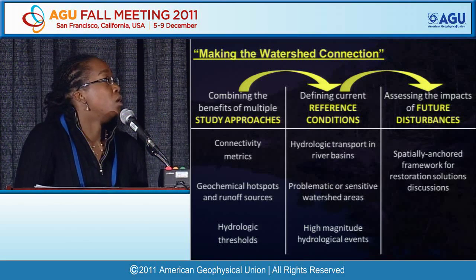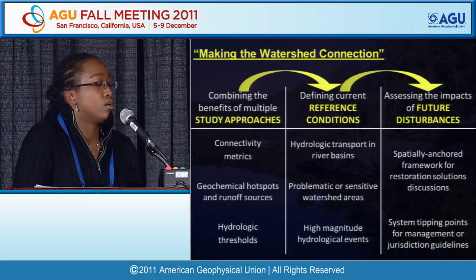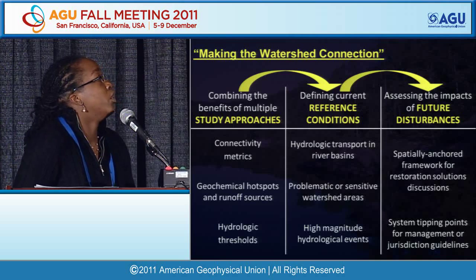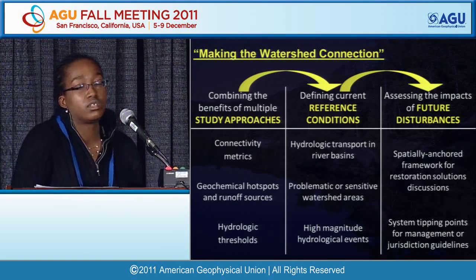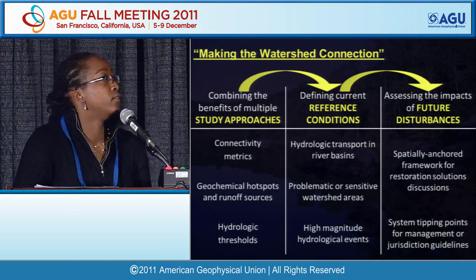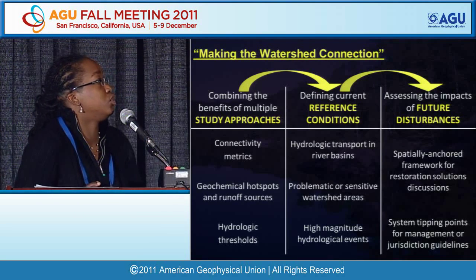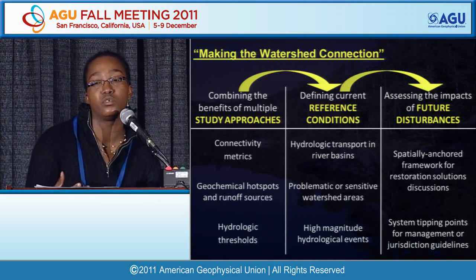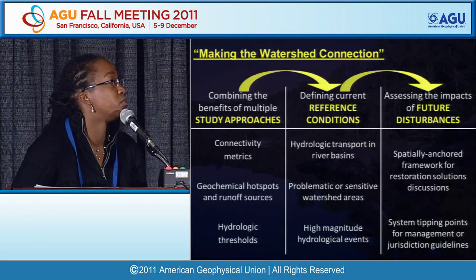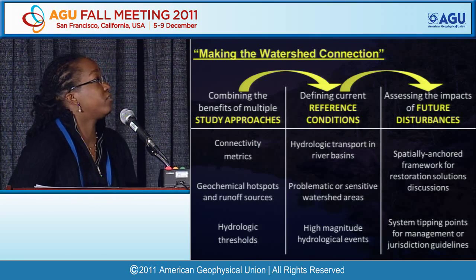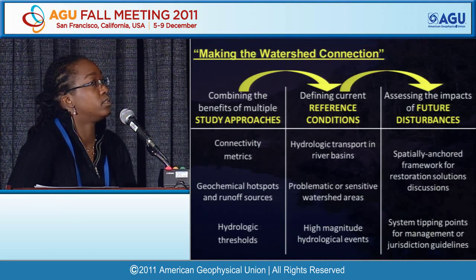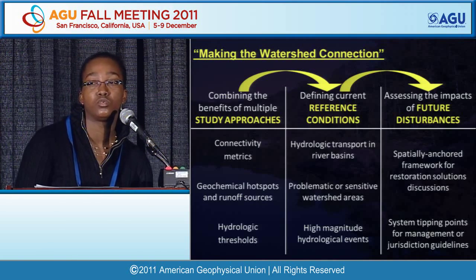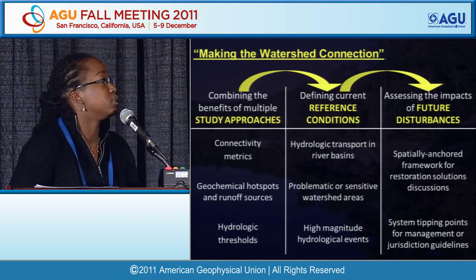Combining the benefits of multiple study approaches is great for defining reference watershed conditions and predicting future ones — illustrating the potential of the connectivity concept for understanding human-natural systems and their response to change. Improved connectivity metrics could be key for understanding hydrologic transport in larger river basins. Tracer studies are particularly helpful for pinpointing sensitive watershed areas — areas problematic not only because of local geochemistry but also because of their potential to be connected to the outlet. Thresholds offer an approach to non-stationary time series analysis and extreme events prediction.